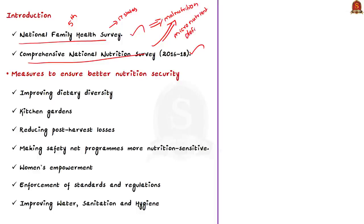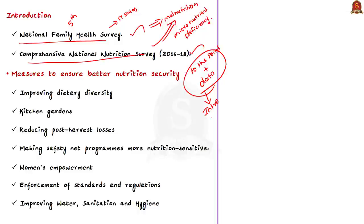A good mains introduction must have three features: it must be relevant to the question, it must be to the point and crisp, and it must have some valid data — most preferably from a government organization. When the introduction addresses these three points, it becomes more attractive and helps fetch more marks. Now, moving on to the article, let us see the author's views regarding nutrition security in our country.